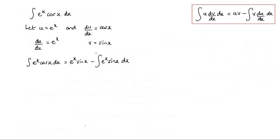Now if you notice we have another integral here where we're going to have to use integration by parts. Let me do that just over here. So we have the integral of e to the x sin x with respect to x. And again we can apply this rule here. So let u equal e to the x, and we'll have dv by dx equal sin x.